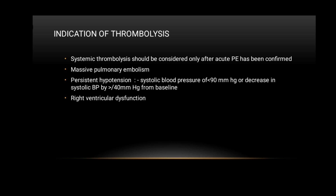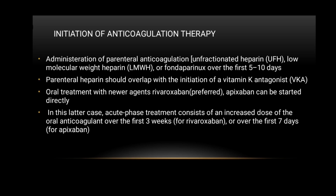Systemic thrombolysis should be considered only after acute pulmonary embolism has been confirmed and the PE is massive, characterized by persistent hypotension (systolic blood pressure less than 90 mmHg or a decrease of more than 40 mmHg from baseline) and right ventricular dysfunction. For anticoagulation, parenteral anticoagulation with unfractionated heparin, low molecular weight heparin, or fondaparinux over the first 5 to 10 days is mandatory. Parenteral heparin should overlap with initiation of a vitamin K antagonist. Oral treatment with newer agents such as rivaroxaban or apixaban can be started directly, with an increased initial dose over the first 3 weeks for rivaroxaban or the first 7 days for apixaban.